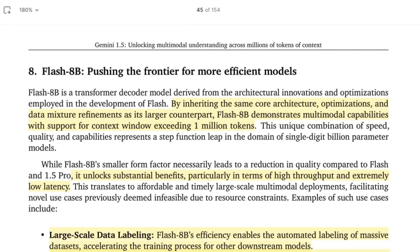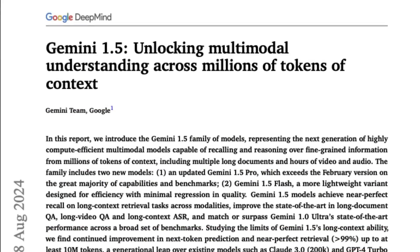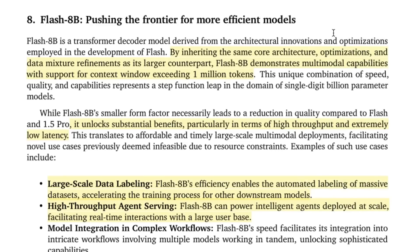An 8 billion parameter model — on the sort of size of something like a Llama 3 — that's a Flash model. If you've been following arXiv, the recent update to the Gemini 1.5 paper has a whole bunch of details about this model. This is just an experiment, and it sets the tone for where the Gemini team is going: constantly exploring new versions, new fine-tunes, trying out different datasets, with new TPUs speeding up the rate of experimentation.